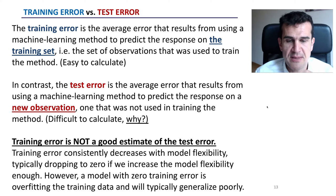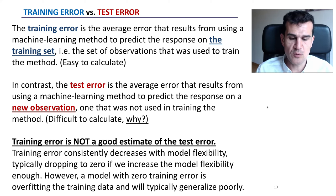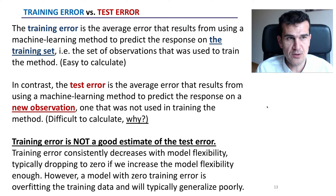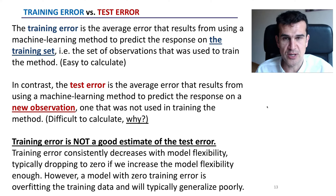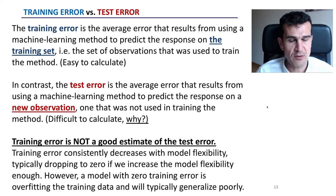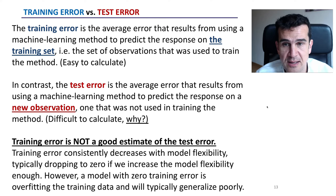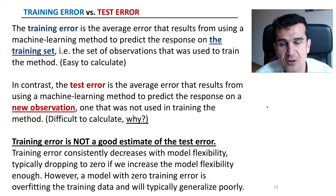When we have a data set and use it to train a model, it's fairly easy to compute the training error — we just apply that fitted model on the same set we used to train it. On the other hand, computing an estimation of the test error is not easy; we really need new data. Something really important to realize is that training error is not a good estimate of test error.